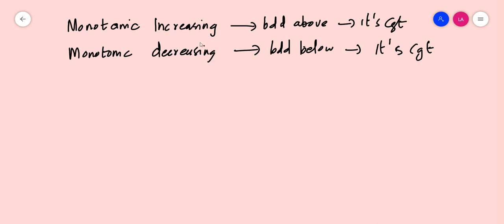If a monotonic sequence is not bounded above, it is not convergent. So it is natural to assume that, since it keeps increasing, it goes to plus infinity — it is a properly divergent sequence which diverges to plus infinity. Similarly, if a monotonic decreasing sequence is not bounded below, it goes to minus infinity.